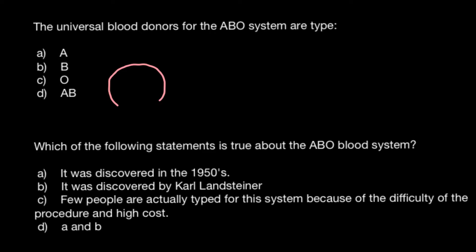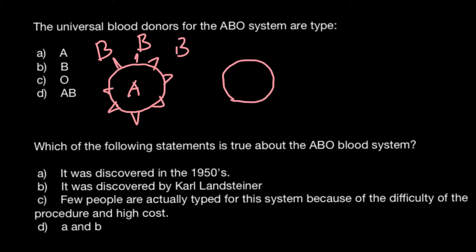Imagine that we have four blood groups, and these blood groups are defined by antigens on the surface of the red blood cell. So imagine this is a red blood cell that belongs to blood group A — that means on the surface it would have antigens A, and in the serum of such a blood group we would find antibodies B.